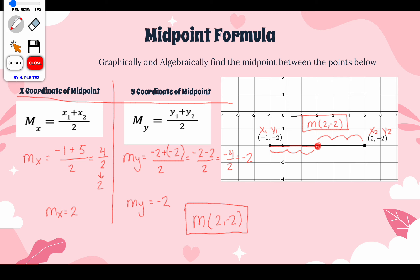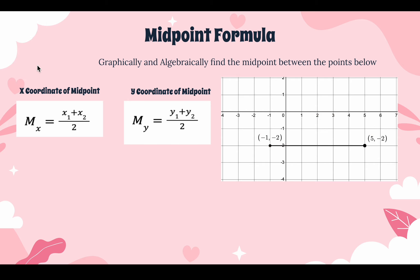Just be mindful of your signs. We have that complex part where we have plus negative 2, so just go slow. You can always use your calculator to double-check yourself as well.